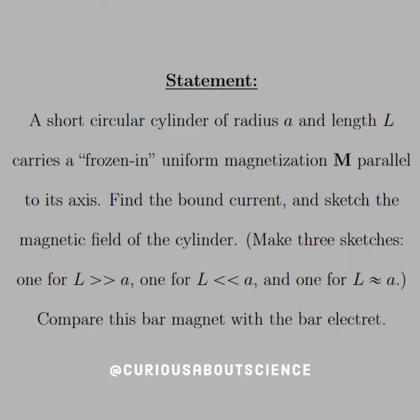The statement reads: a short circular cylinder of radius A and length L carries a frozen-in uniform magnetization M parallel to its axis. Find the bound current and sketch the magnetic field of the cylinder. We want this for three cases: for L greater than A by a large margin, for L much less than A, and for L approximately equal to A. And then we'll compare this bar magnet to the bar electric.